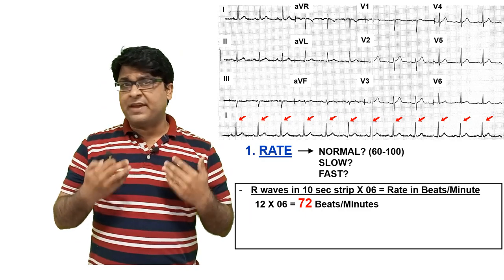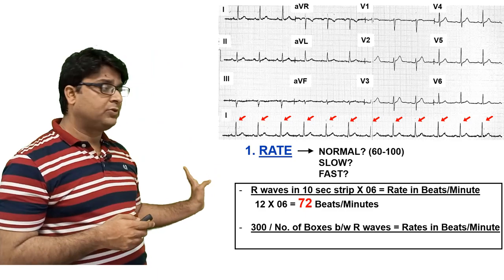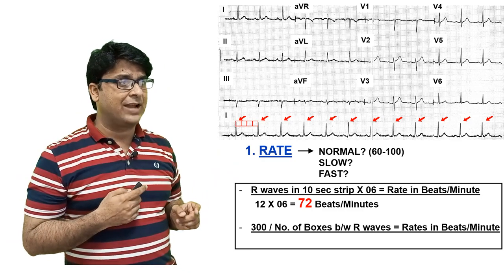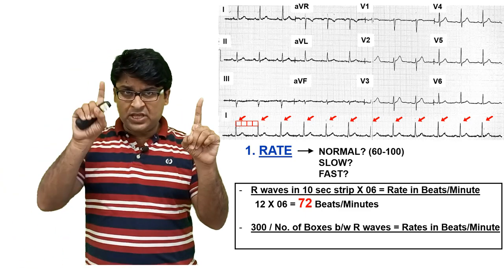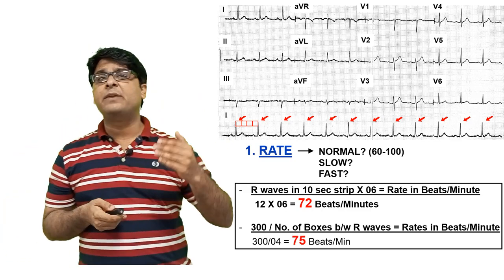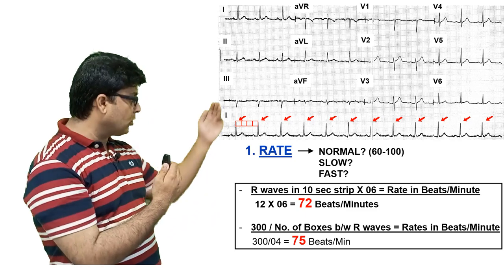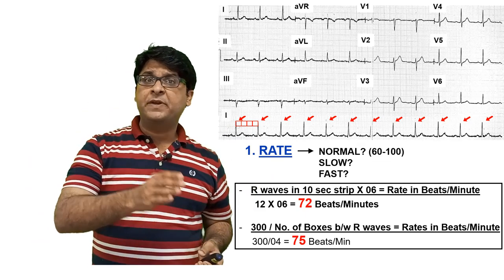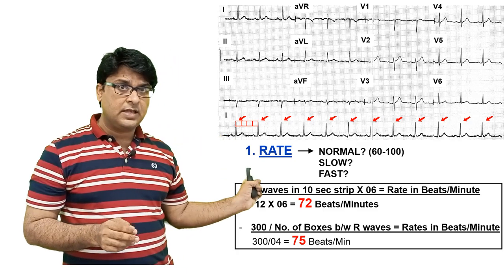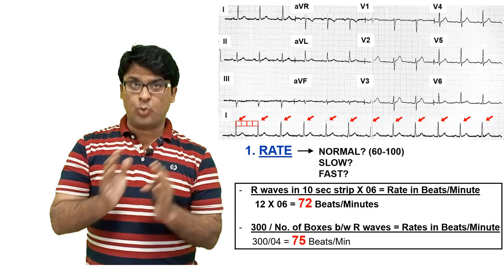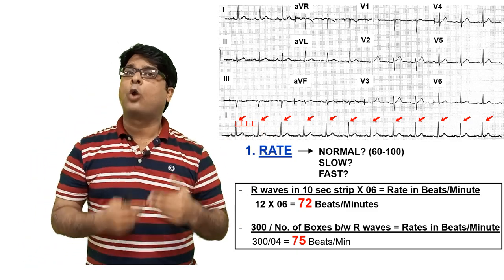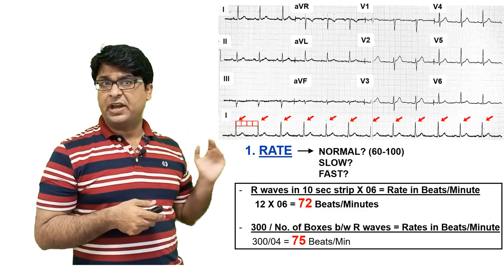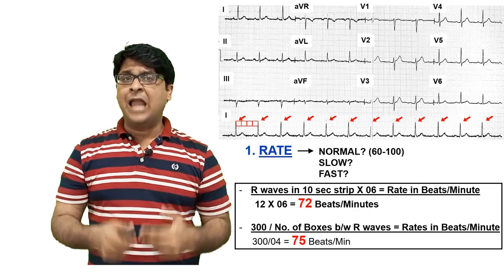There is a second method for calculating rate: 300 divided by the number of boxes between the R waves. For example, if there are 4 boxes between one R wave and the next, then 300 ÷ 4 = 75 beats per minute. Both methods give similar results — 72 or 75 beats per minute — both within the normal range of 60–100. These methods give you a good idea if the heart is beating normally, too fast, or too slow.